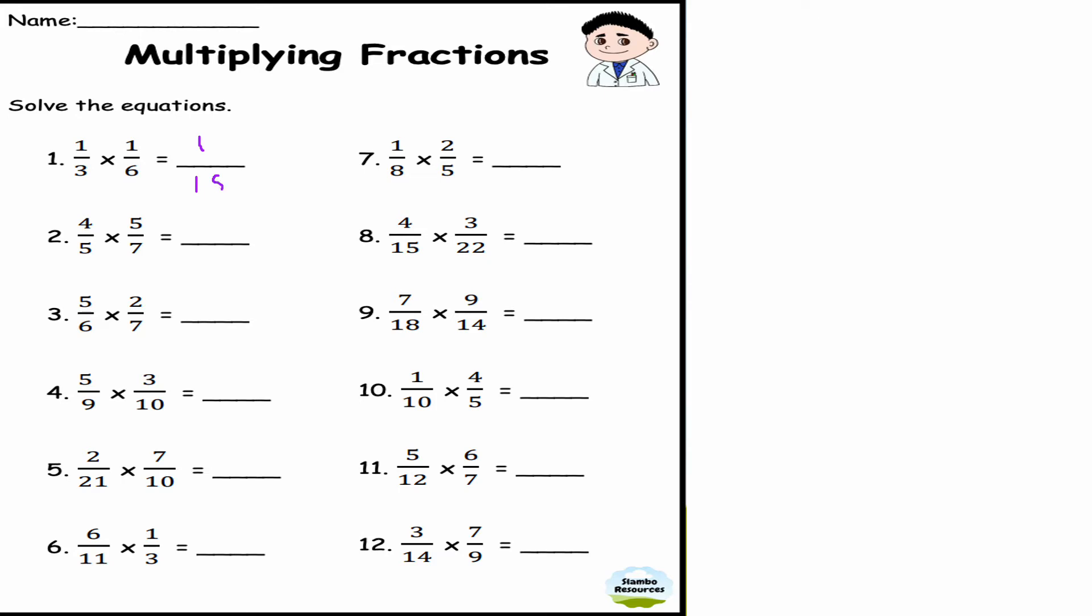This is question number two: 4/5 times 5/7. I do 4 times 5 which is 20, and 5 times 7 which is 35. Now this fraction can actually be simplified, so I can divide top and bottom by 5, so I get 4/7, simplifying that fraction down.